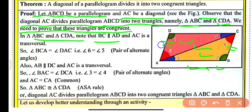BC is parallel to AD and AC is the transversal. So angle BCA equals angle DAC — that is, angle 6 equals angle 5 — which is a pair of alternate interior angles.